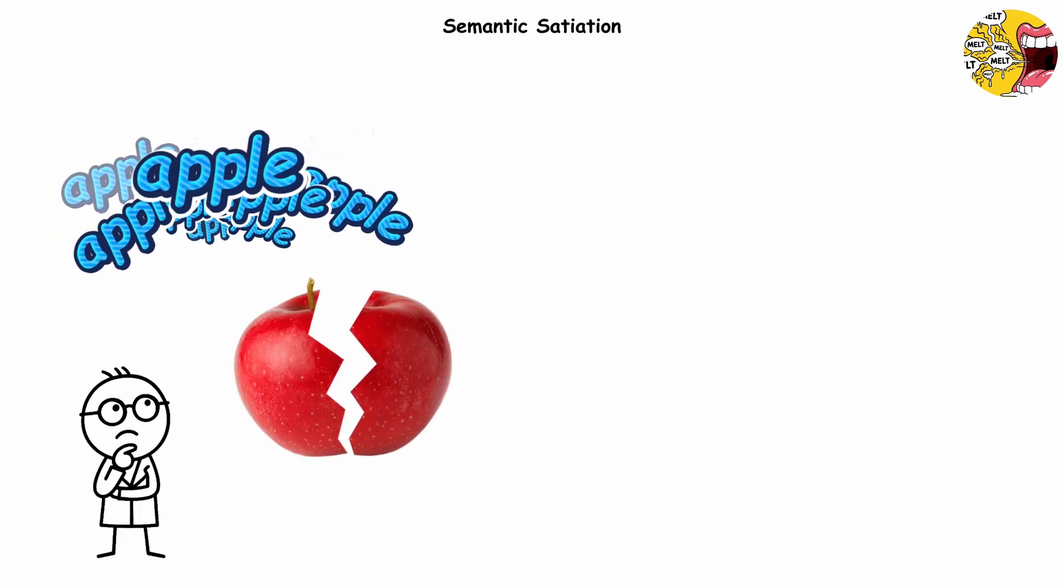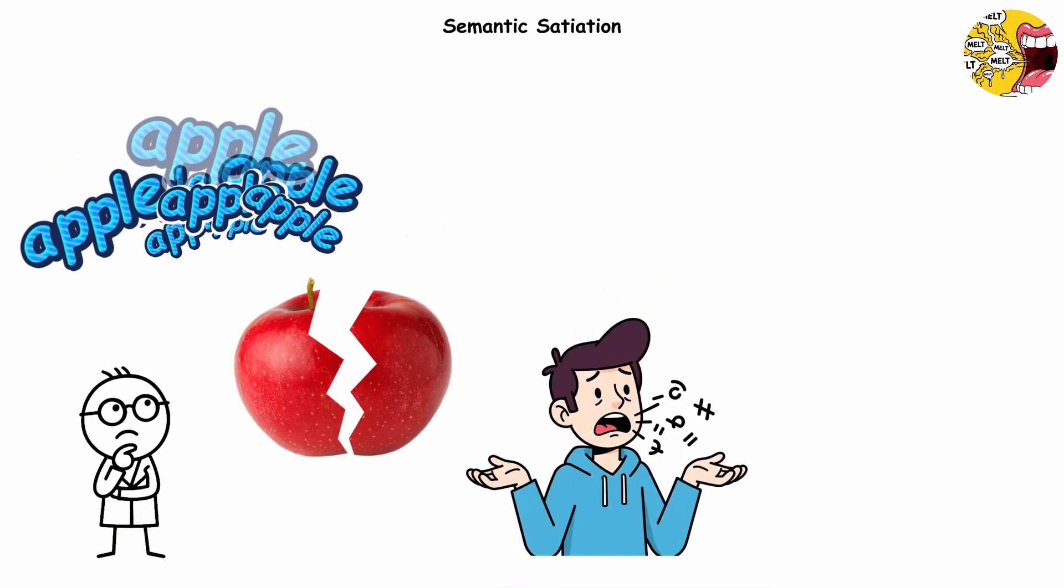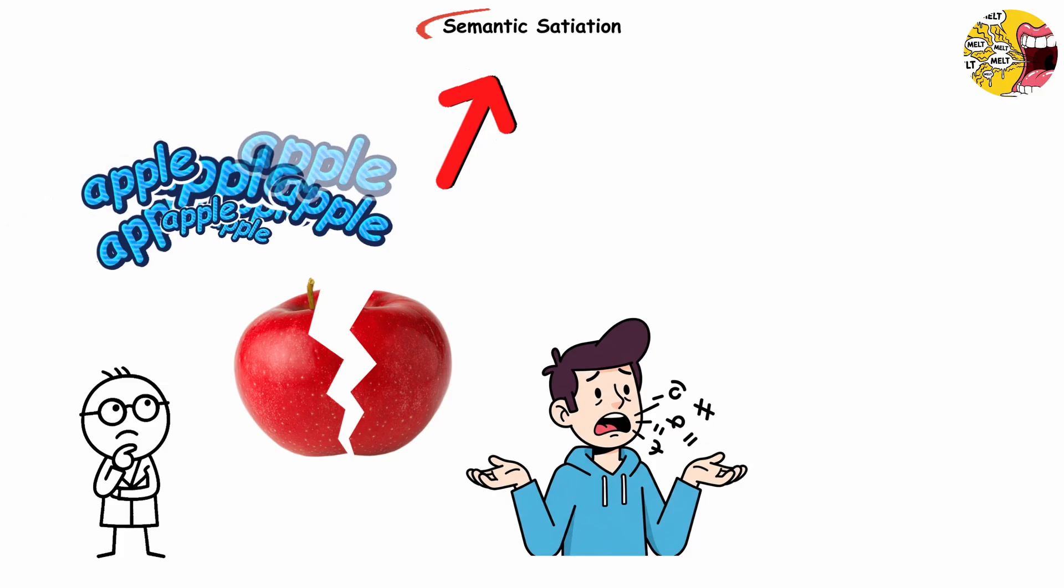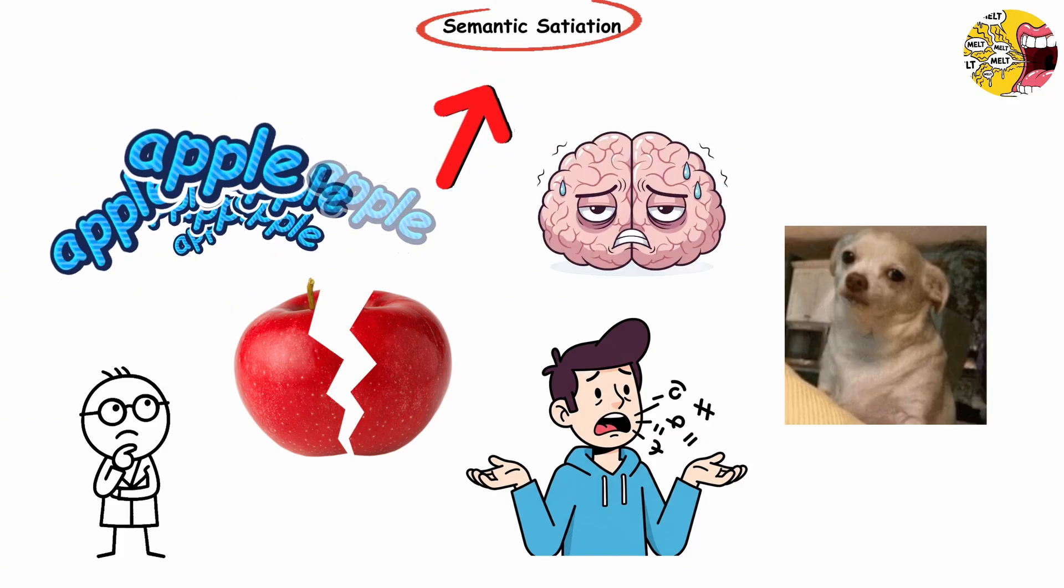Semantic satiation. Repeat the word apple 20 times. After a while, it doesn't feel like a fruit anymore. It sounds like nonsense. That's semantic satiation. Your brain's version of getting sick of its own voice.